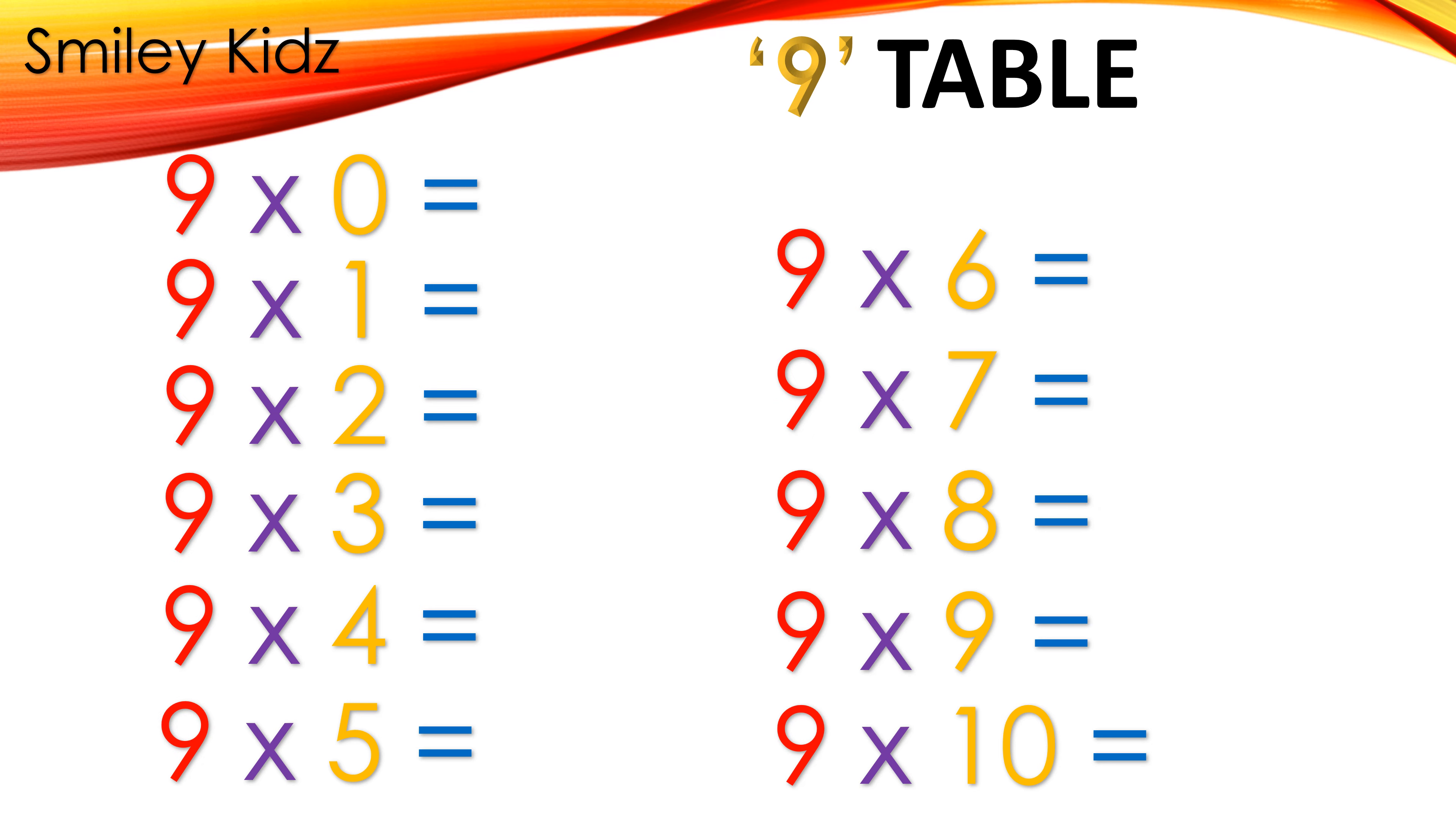9 table: 9 times 0 is 0, 9 times 1 is 9, 9 times 2 is 18, 9 times 3 is 27, 9 times 4 is 36, 9 times 5 is 45, 9 times 6 is 54, 9 times 7 is 63, 9 times 8 is 72, 9 times 9 is 81, 9 times 10 is 90.